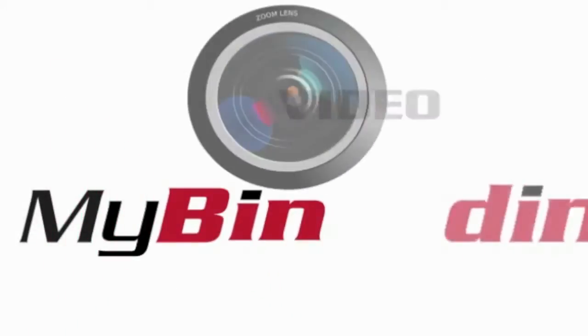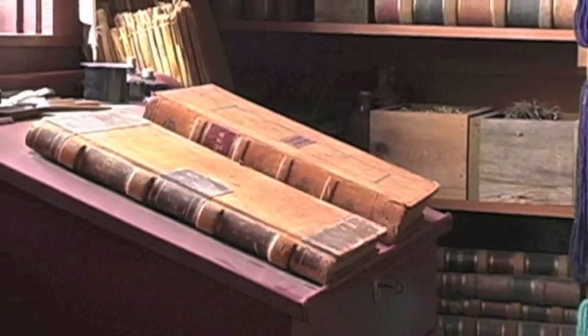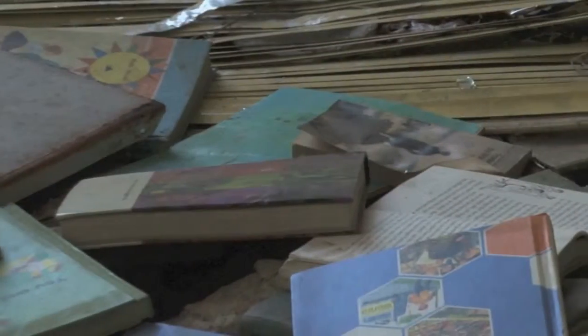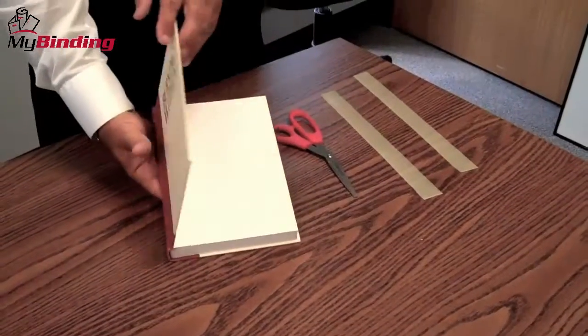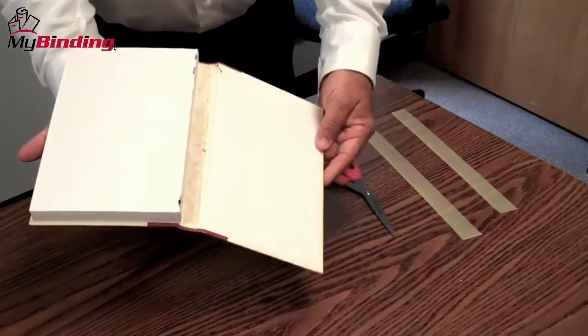Welcome to MyBinding video. One of the largest costs that a library or book dealer deals with is the price of repairing or replacing ripped or damaged books. Typical costs are $6 to $8 per book plus shipping, and the book is out of circulation for quite some time.